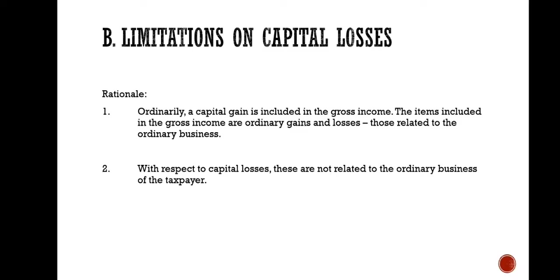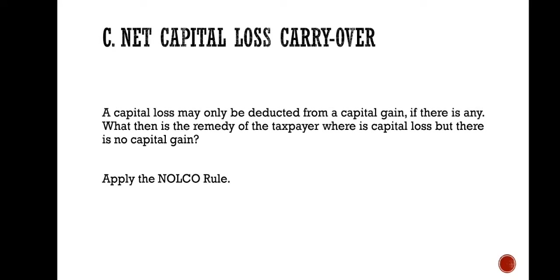The loss limitation rule provides that losses from sales or exchanges of capital assets shall be allowed only to the extent of the capital gains from such sale or exchange. A capital loss can only be deducted from capital gains but never from an ordinary gain, while an ordinary loss may be deducted from both capital and ordinary gain. This is applicable to both individuals and corporations.